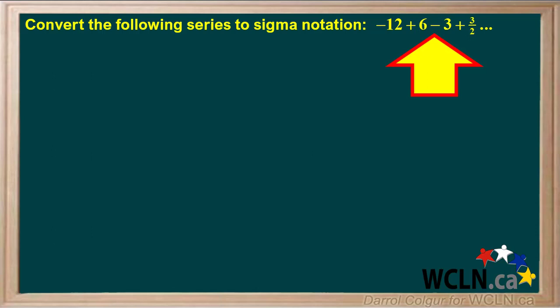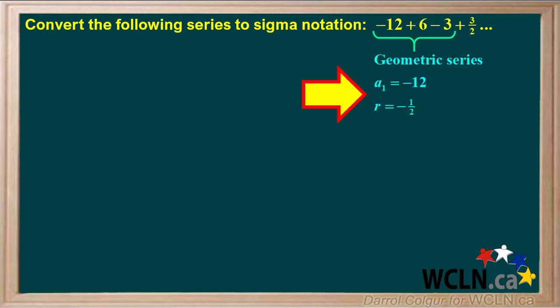We're asked to convert the given series to sigma notation. Looking at the first three terms, we can see that this is a geometric series in which a1 equals negative 12 and r equals negative one half. The three dots at the end of this series tell us there is an infinite number of terms.